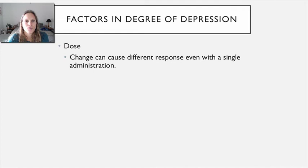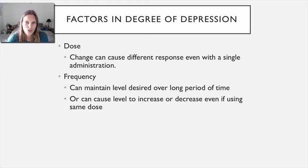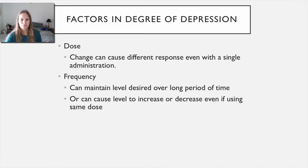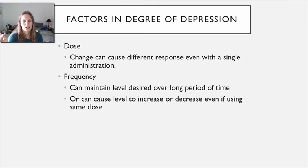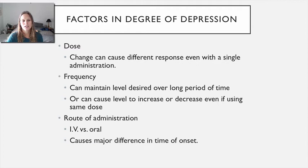It all depends on the dose, so dose is one of the major factors determining how much depression we actually see. The larger the dose, the greater the degree of depression. Another important factor is how often you are administering the medication. Dosing on the half-life aims to reach a steady state, which is what we're trying to achieve — maintaining some level of depression over a long period of time. Frequency is therefore another key factor, and the third factor is route of administration.